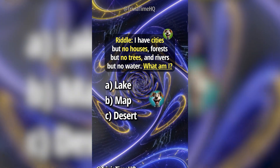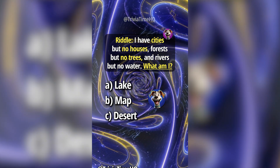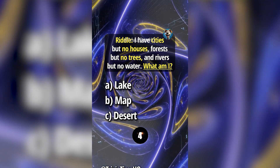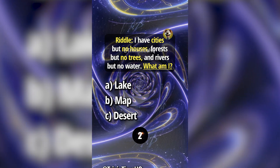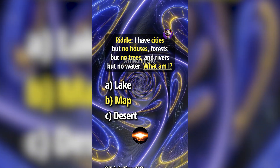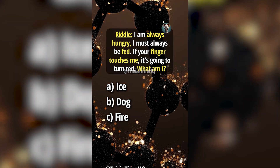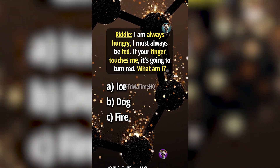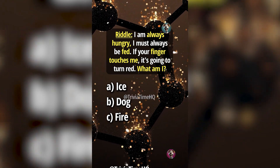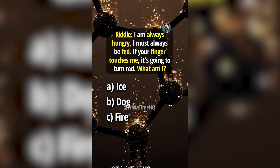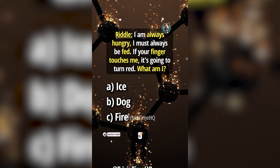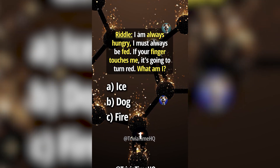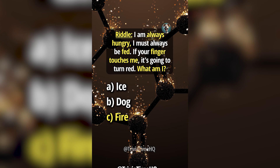Riddle: I have cities but no houses, forests but no trees, and rivers but no water. What am I? Answer B, map. Riddle: I am always hungry, I must always be fed. If your finger touches me, it's going to turn red. What am I? Answer C, fire.